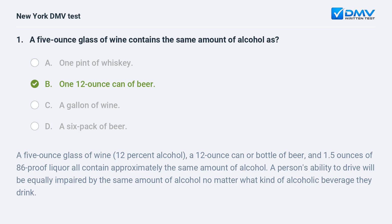The answer is B: One 12-ounce can of beer. A five-ounce glass of wine at 12% alcohol, a 12-ounce can or bottle of beer, and 1.5 ounces of 86-proof liquor all contain approximately the same amount of alcohol. A person's ability to drive will be equally impaired by the same amount of alcohol no matter what kind of alcoholic beverage they drink.